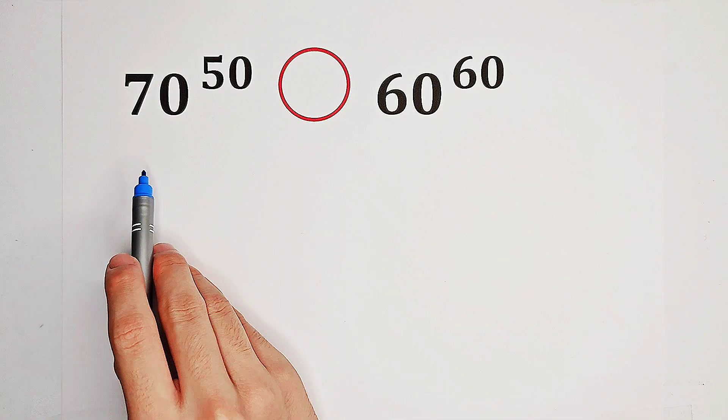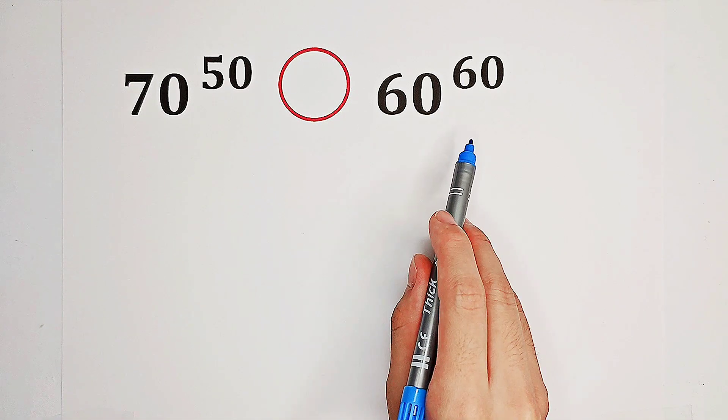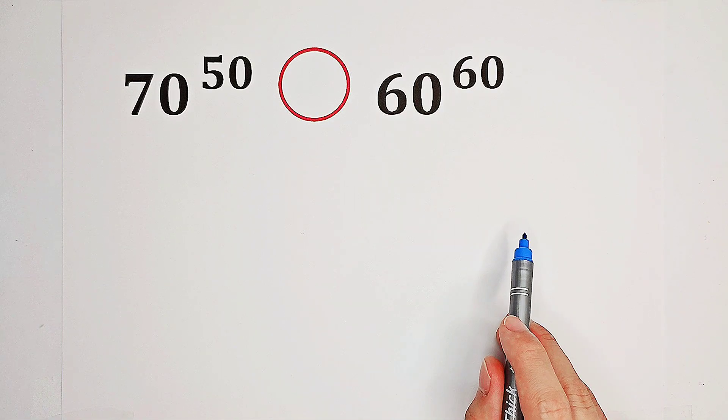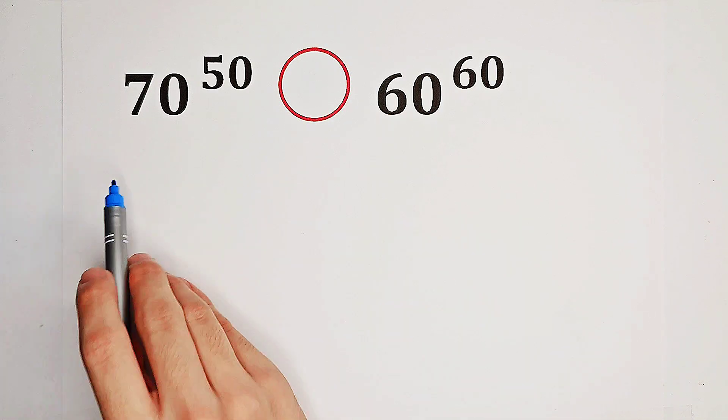Which is greater, 70 to the power of 50 or 60 to the power of 60? What shall we do firstly? Let's consider their division.